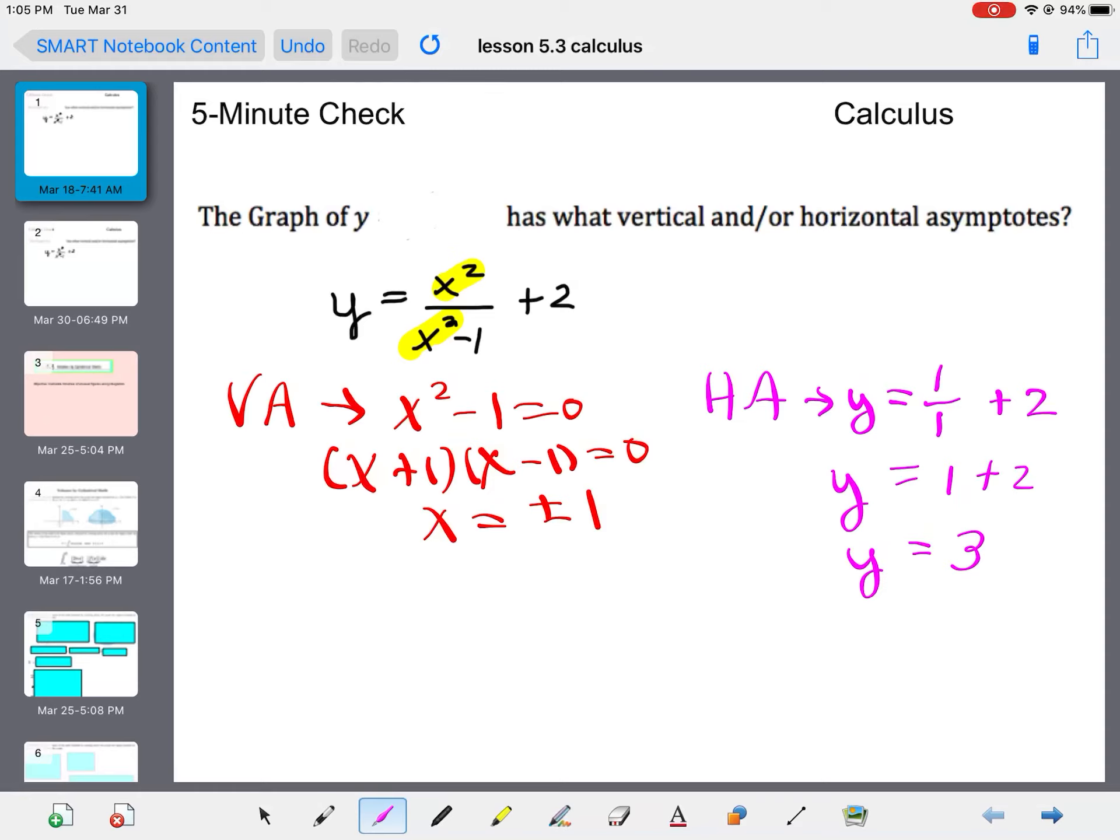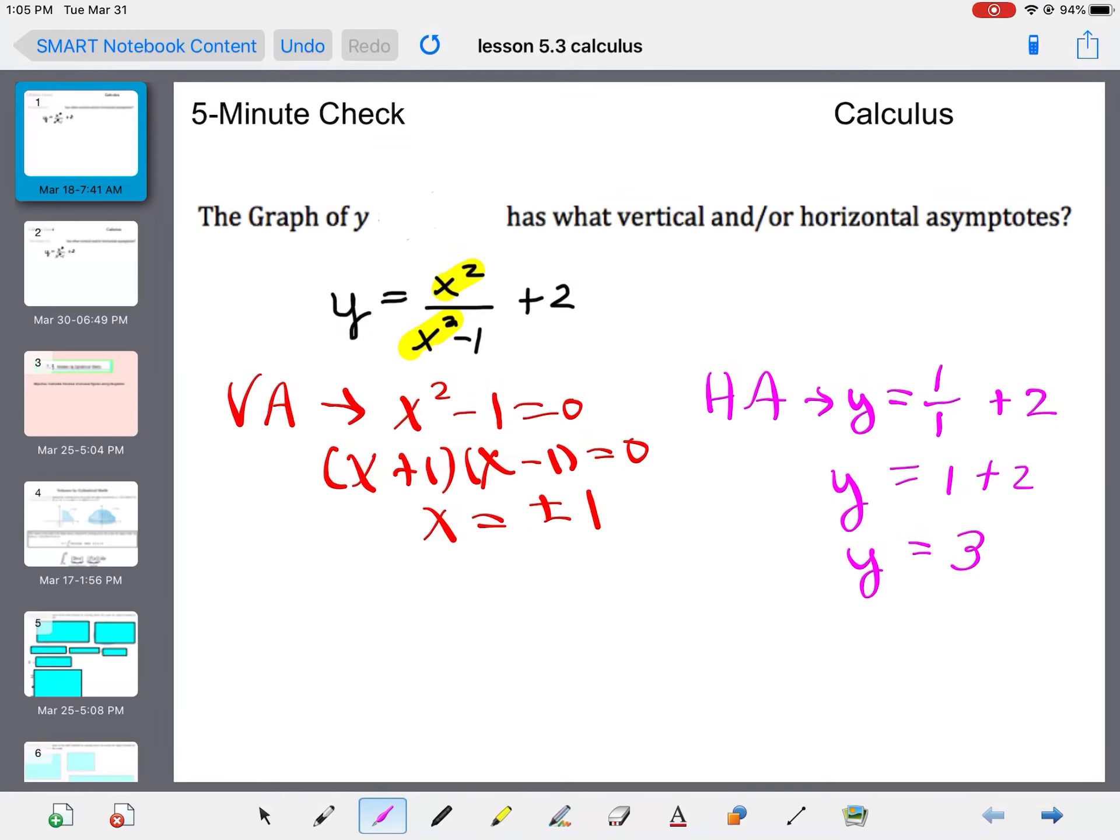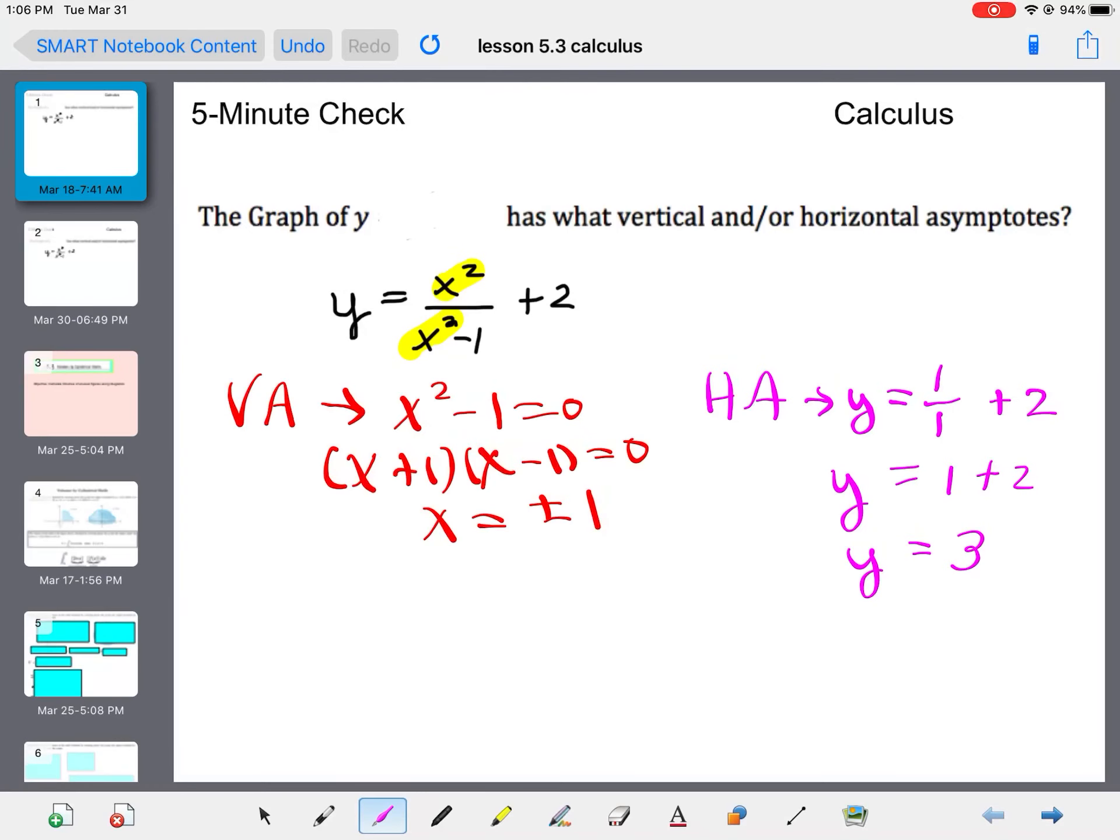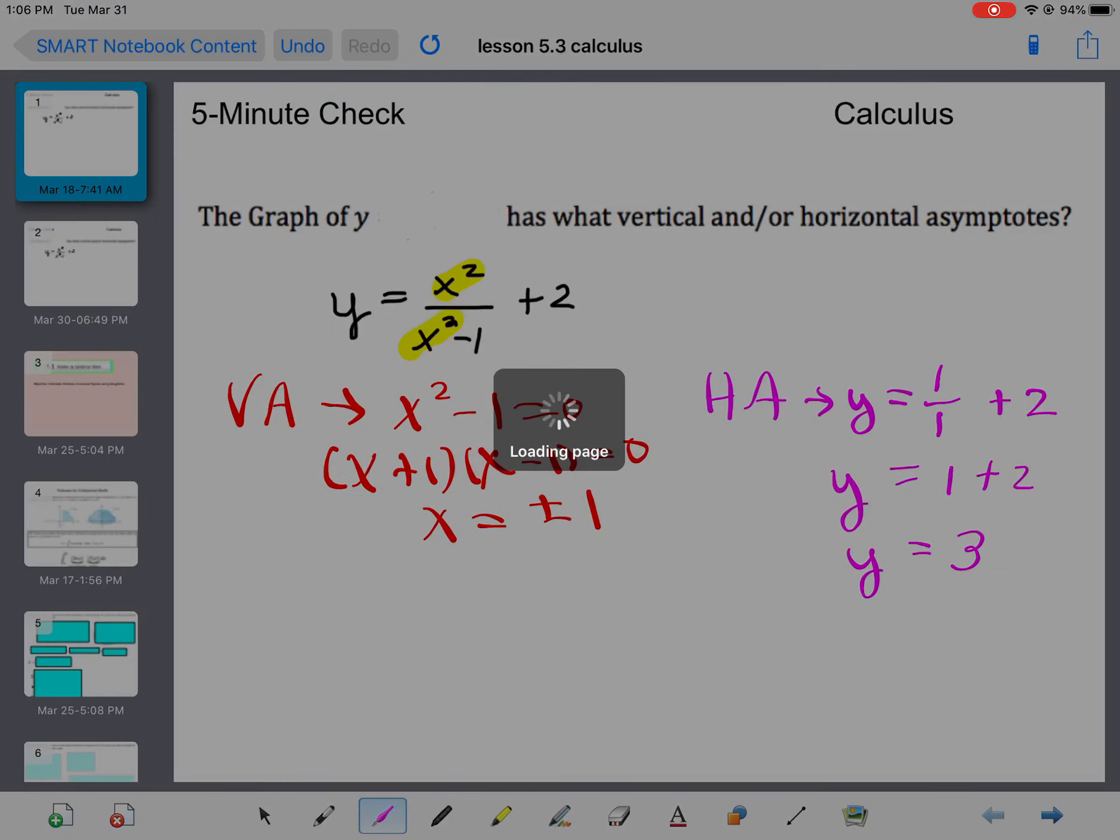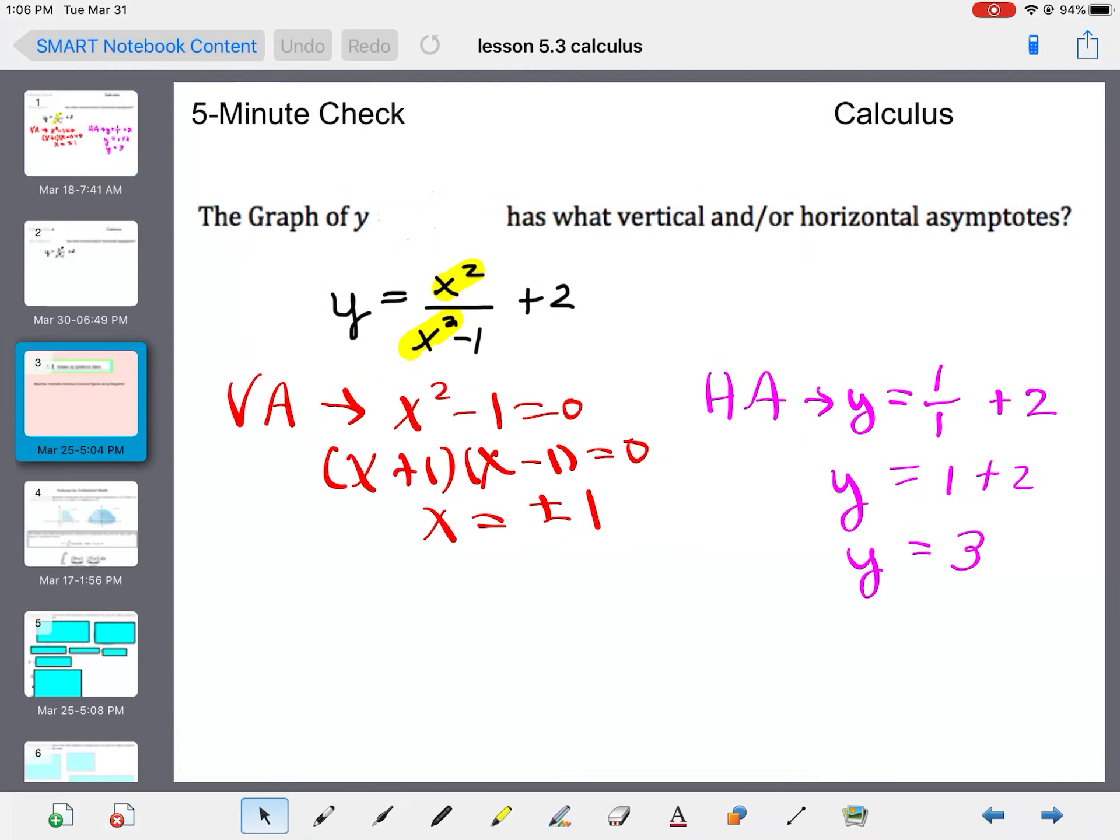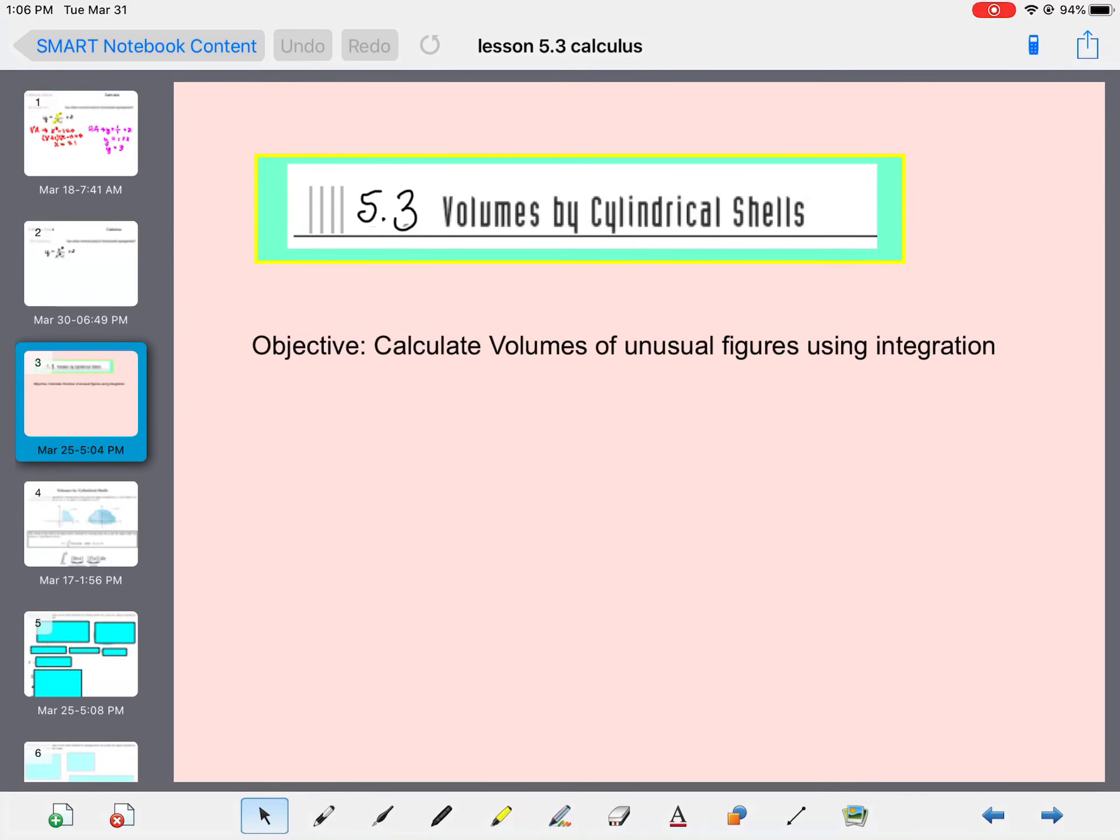And now, let's go ahead and look at lesson five, three. So, five, three is a new way to look at volumes. In section five, two, we did volumes by disk or washer.